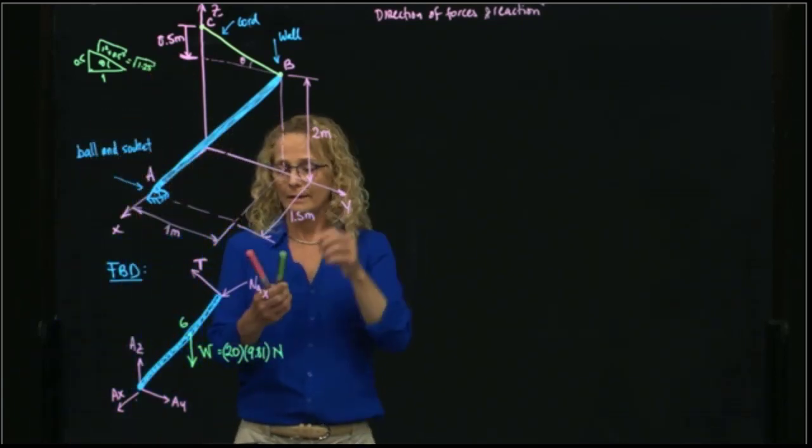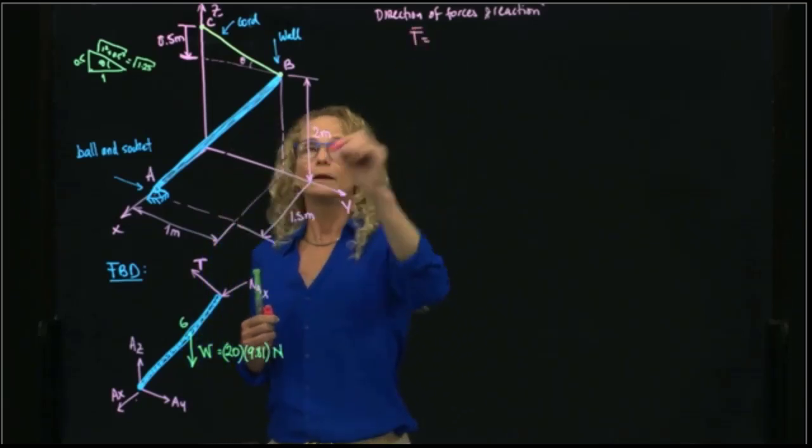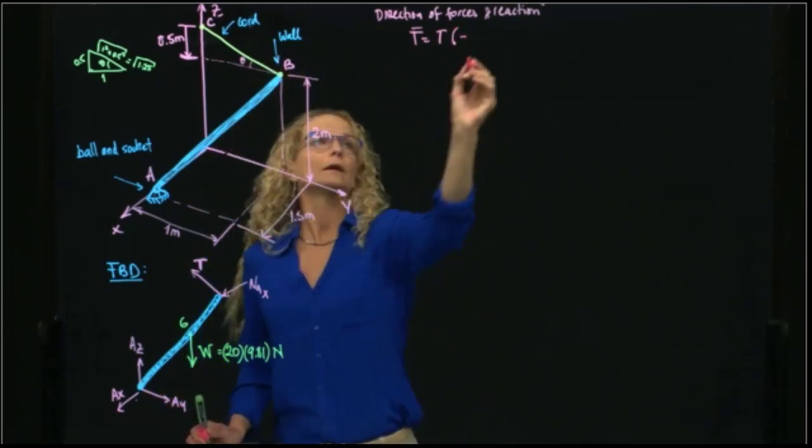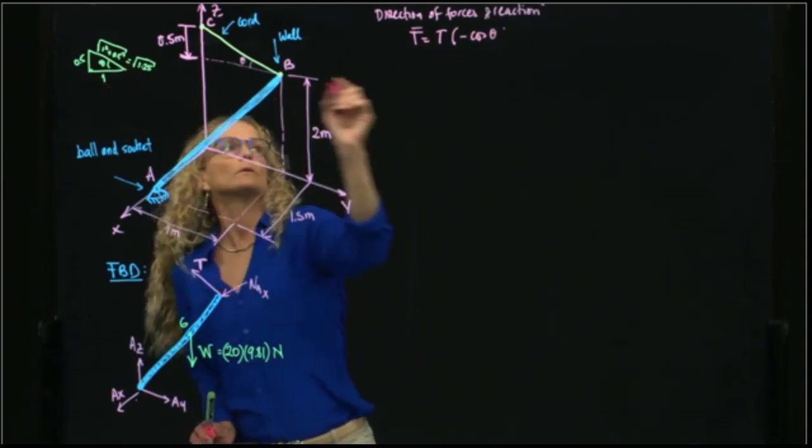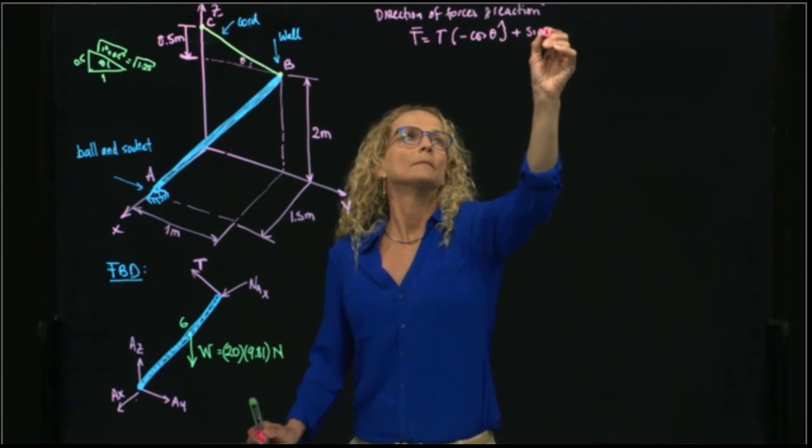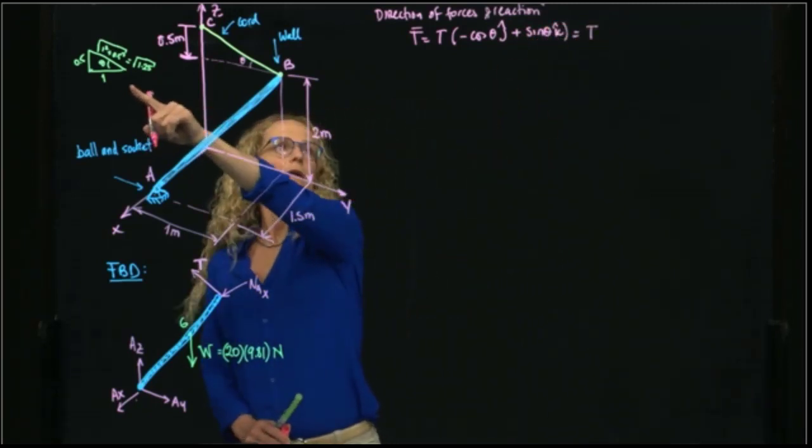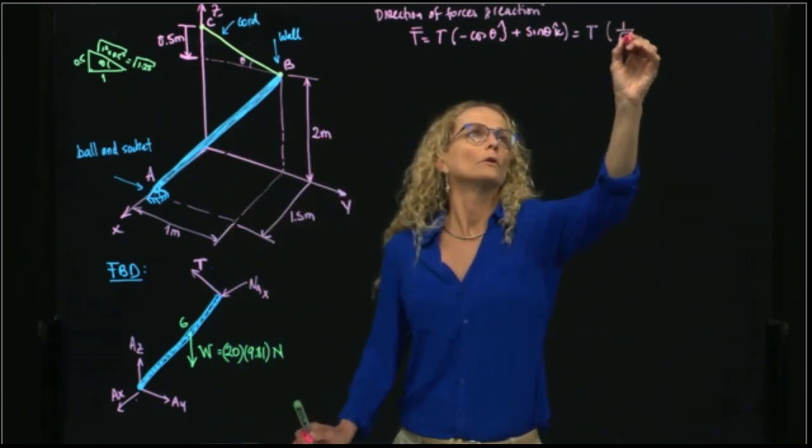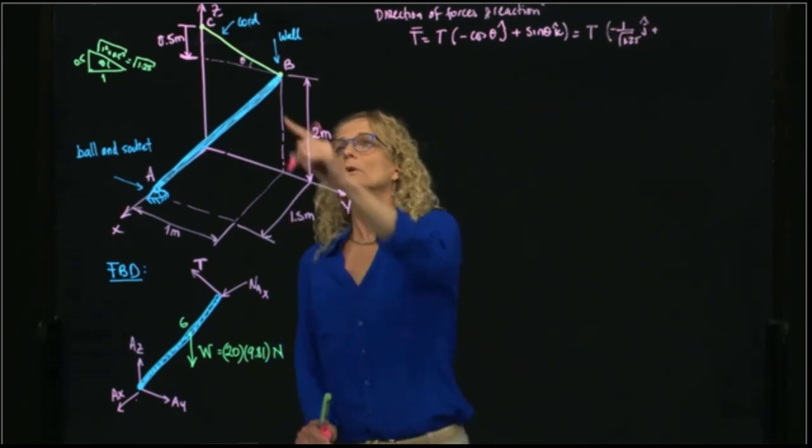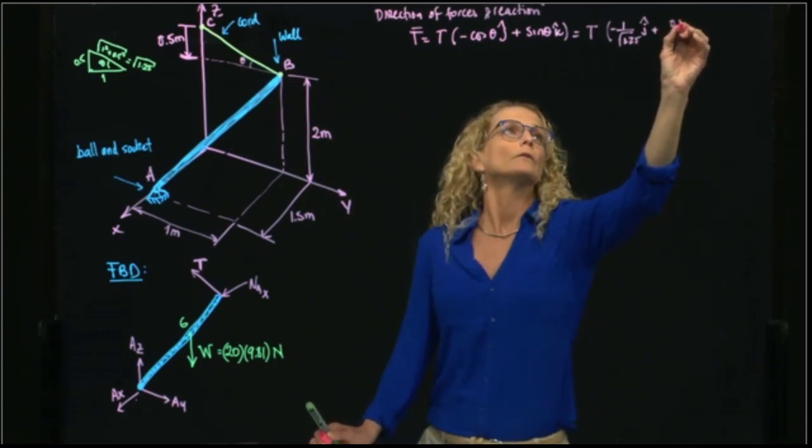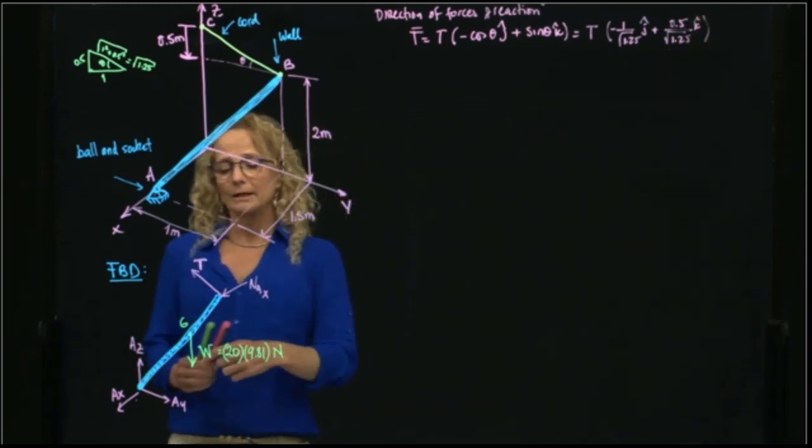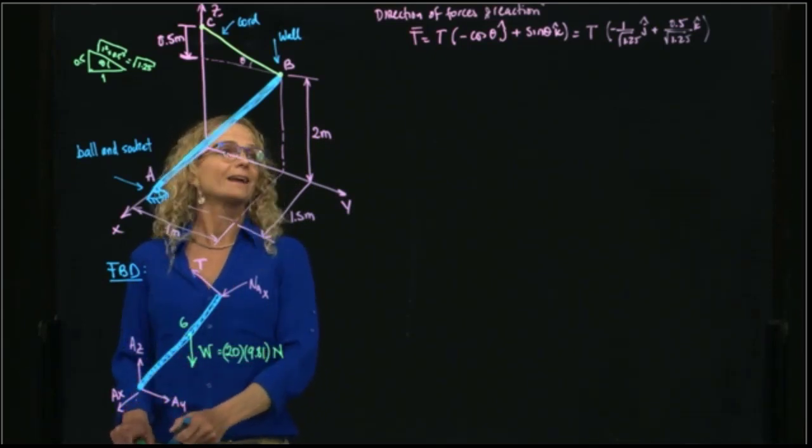So we can say that that tension will be at unknown magnitude, cosine in negative direction, cosine of that angle, which let me call theta, cosine of theta in J plus sine of theta in K. That means that is tension, and we can already write that this is cosine will be 1 over square root of 1.25 in J, negative, plus 0.5 over 1.25 in K. So we have that direction, and the other directions are all known. So therefore, let's start with our equations of equilibrium.